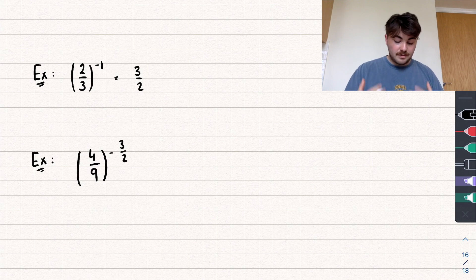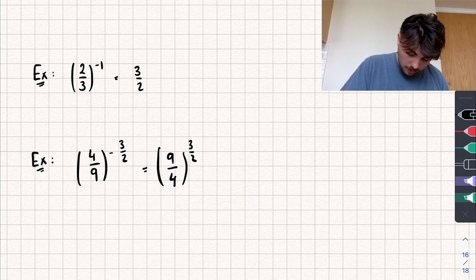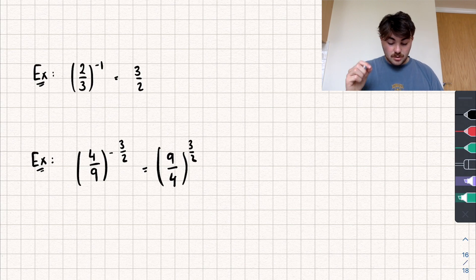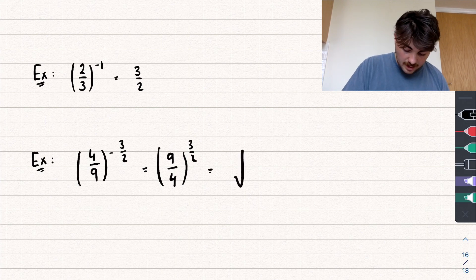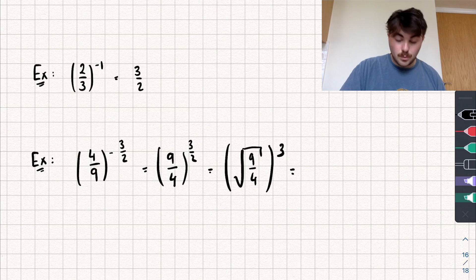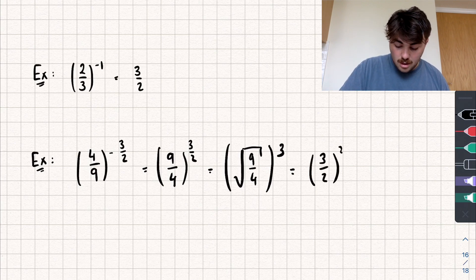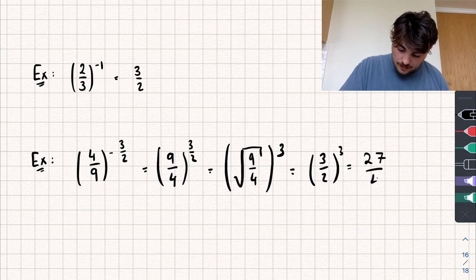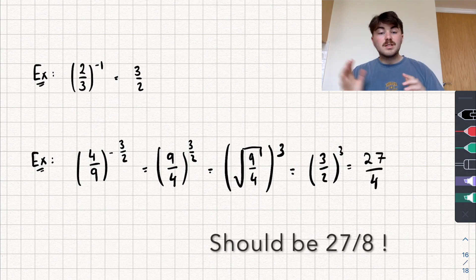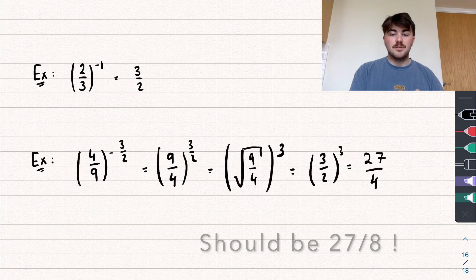Final example: four-ninths to the power of negative three over two. First, take the reciprocal to remove the negative: nine over four to the power of three over two. The denominator of two means we square root it, and then cube the result. The square root of nine over four equals the square root of nine divided by the square root of four, which is three over two. Cubing that gives 27 over eight. Hopefully this video was useful — like, subscribe, and share. I'll link the rest of this Preparing for A Level Maths playlist in the description. Thanks for watching.